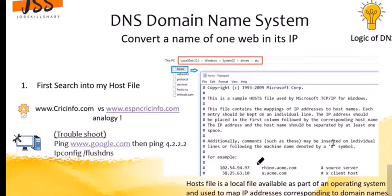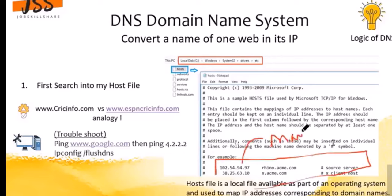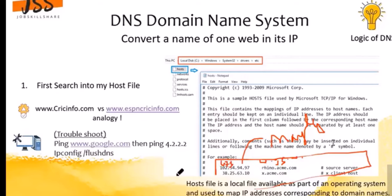The hosts file does not automatically populate — you have to manually type entries. For example, you could type www.jobskillshare.org here and correspond it with a public IP like 67.5 or something similar.